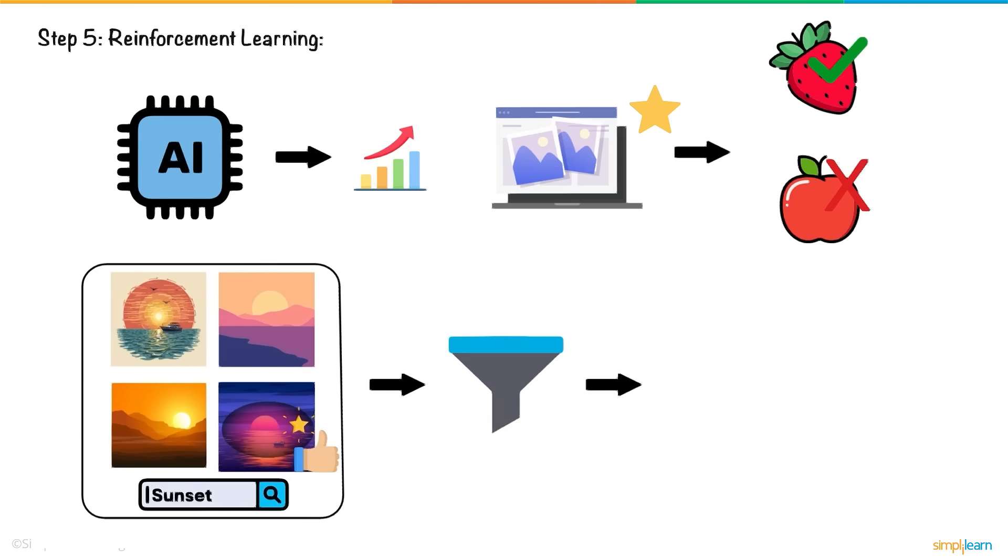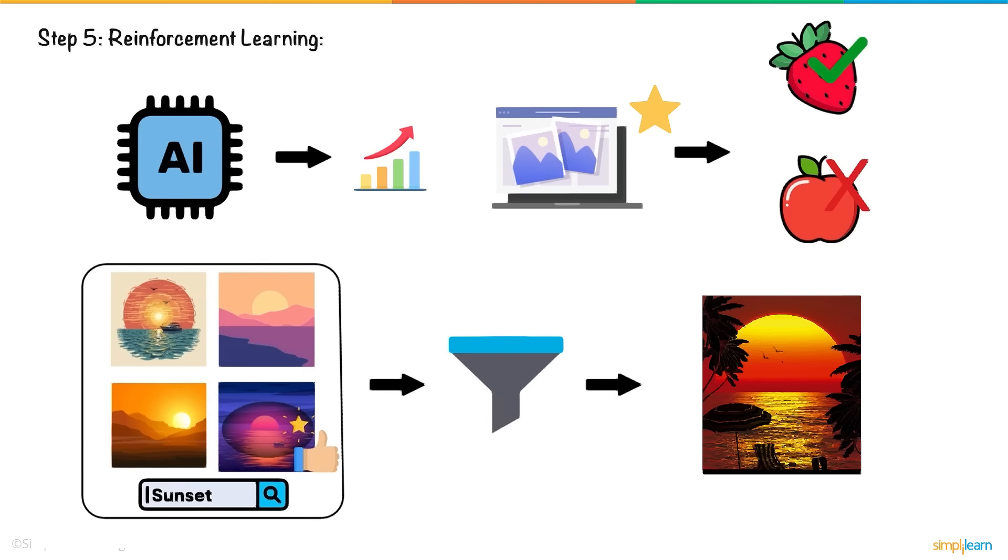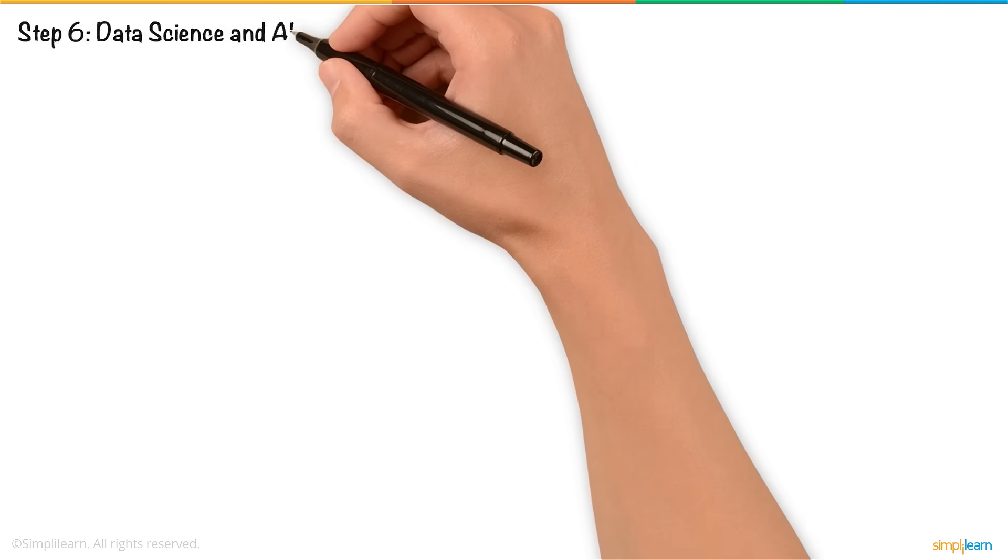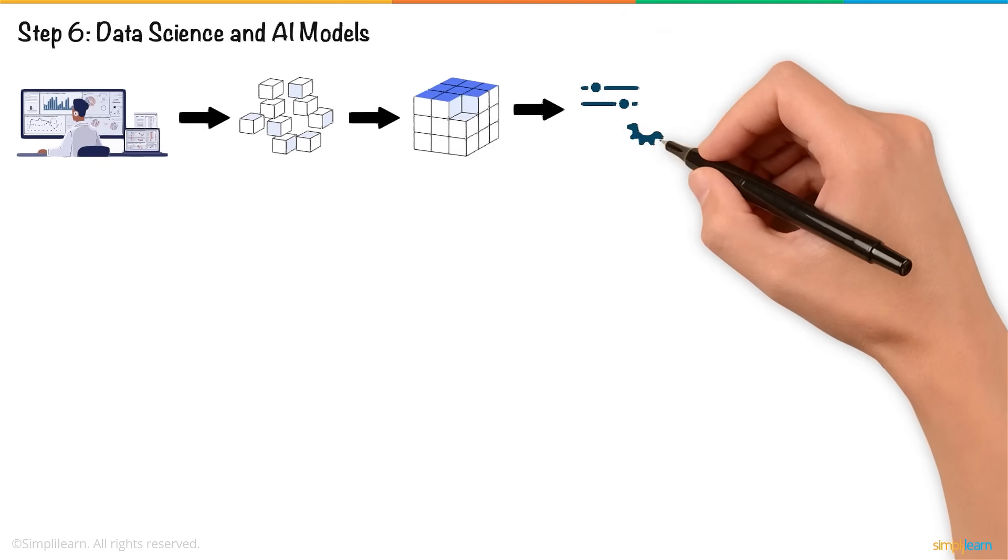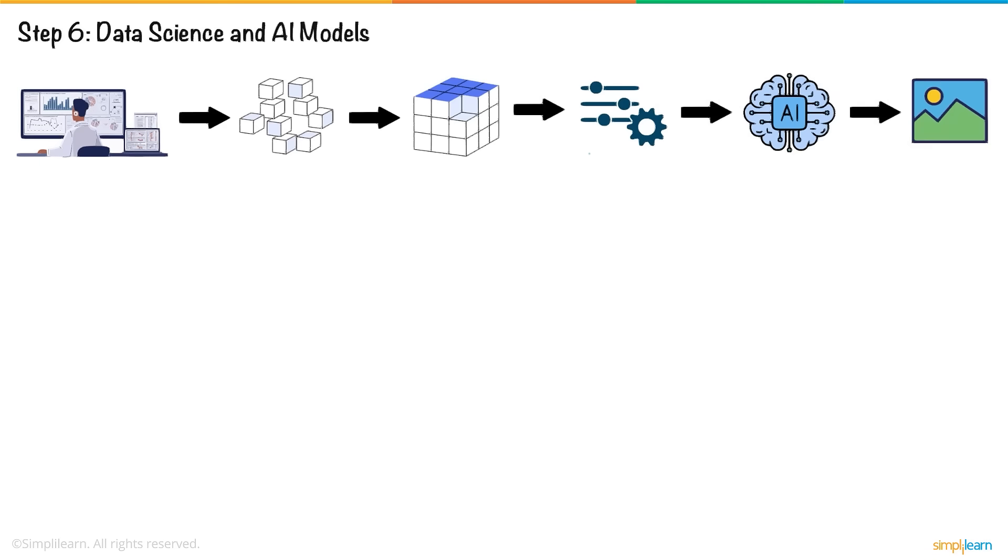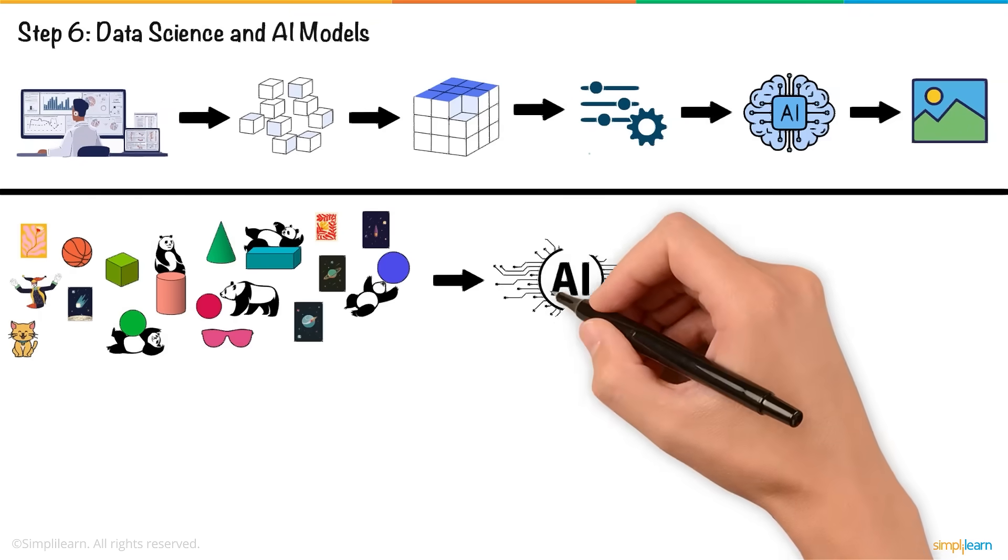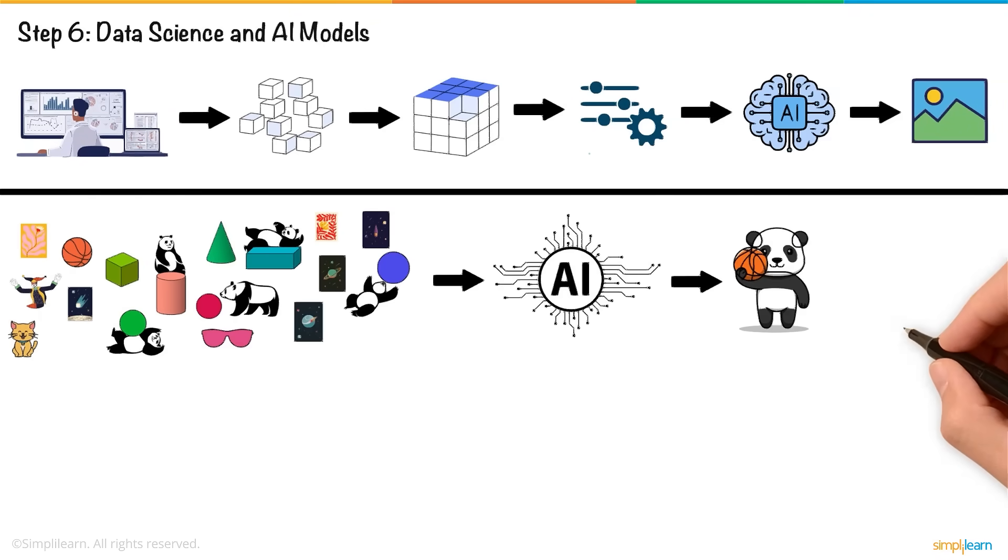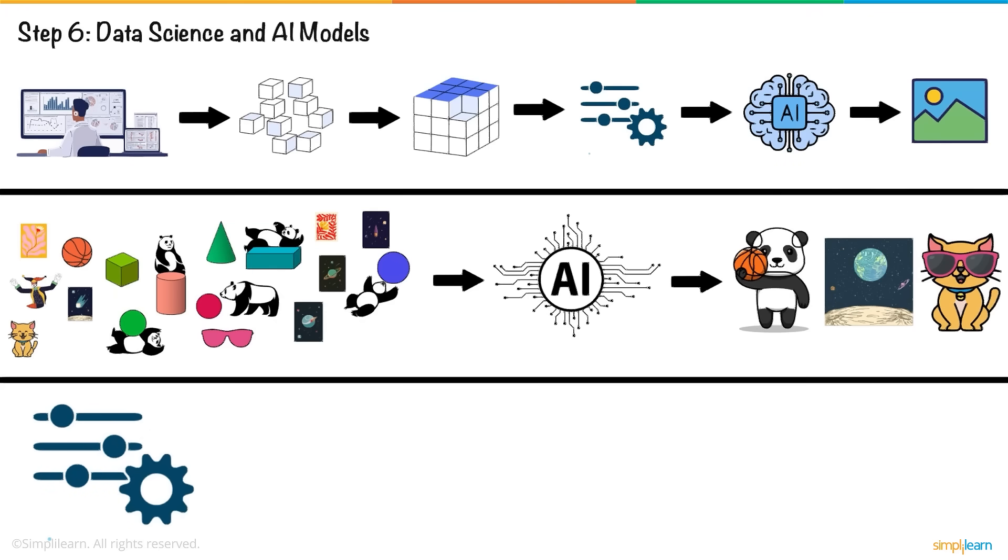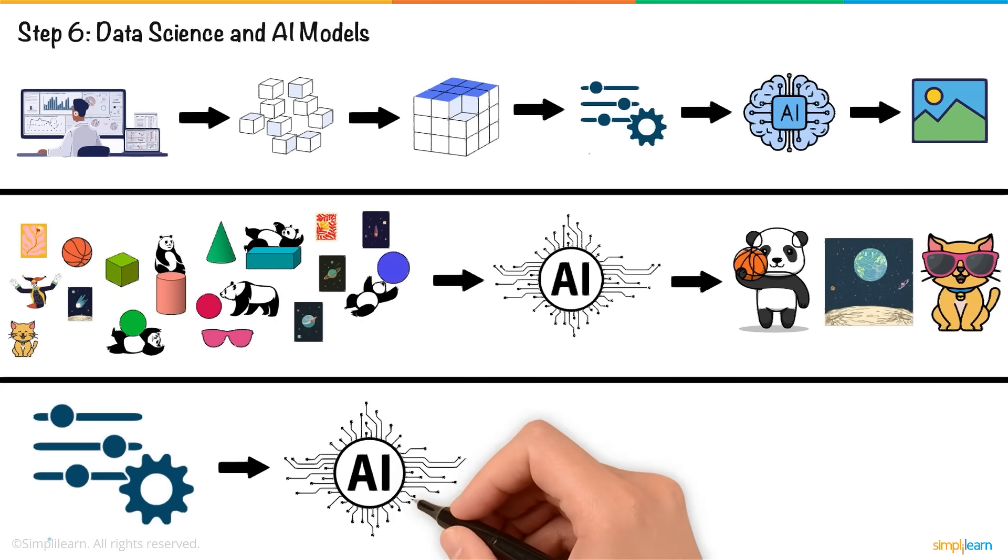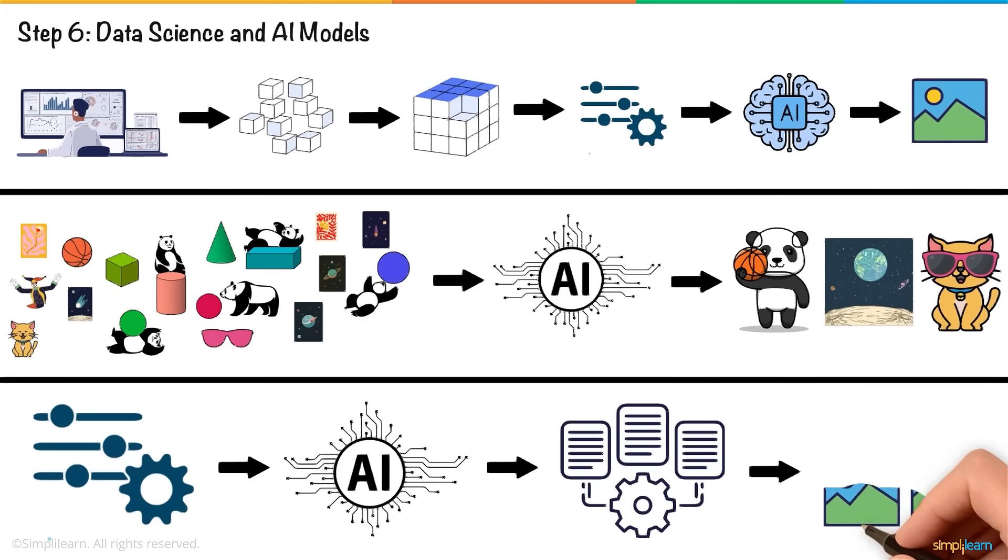Data Science and AI Models: Data scientists curate the training data and define the parameters that help the AI generate accurate images. The more varied the dataset, the more versatile the AI becomes in generating diverse types of content. Advanced models use billions of parameters, which are settings that guide the AI in processing data and generating outputs.